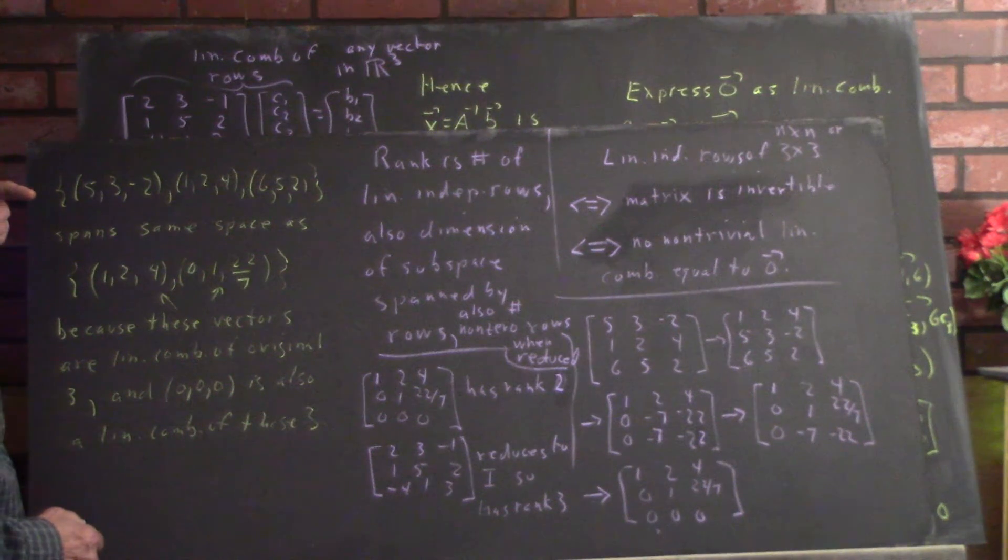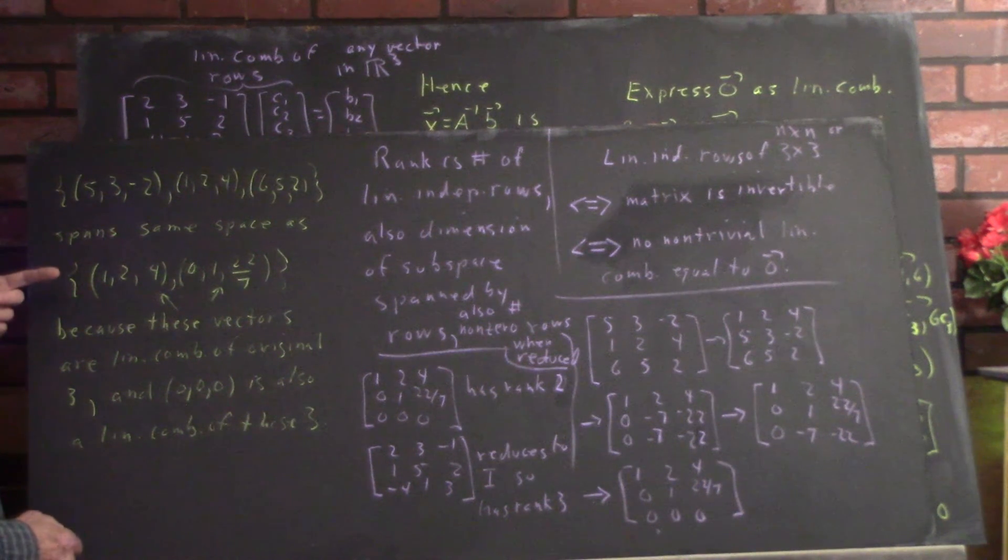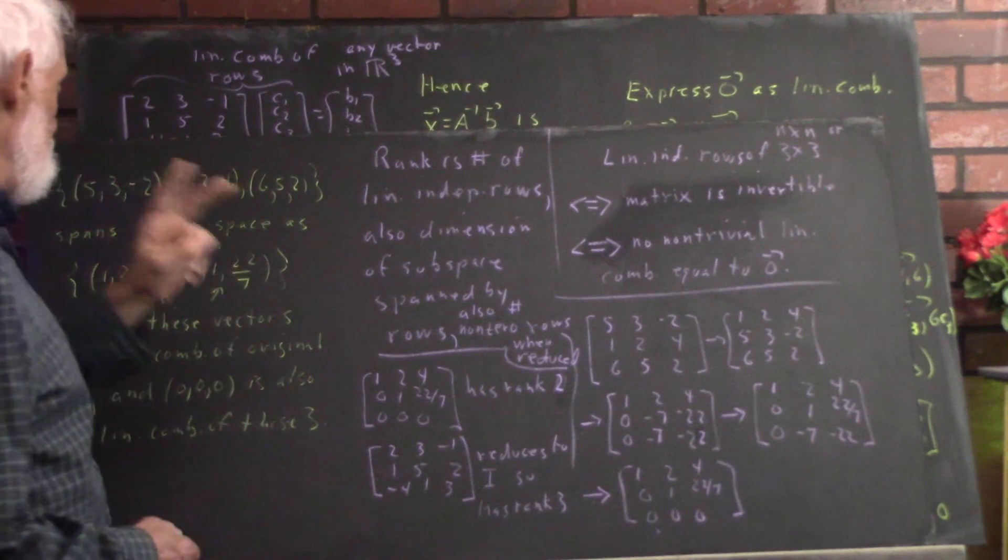These two are linearly independent. So, the rank of the matrix, the number of linearly independent rows, is two.